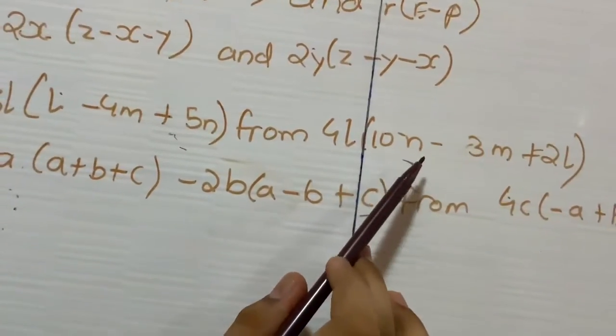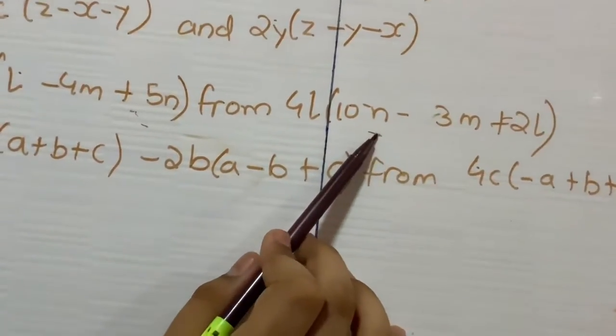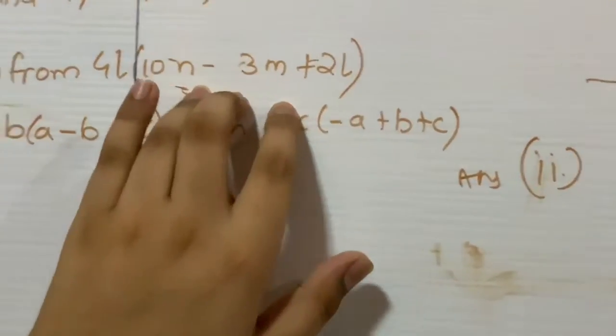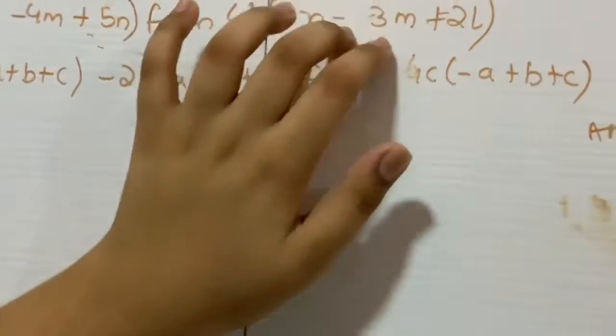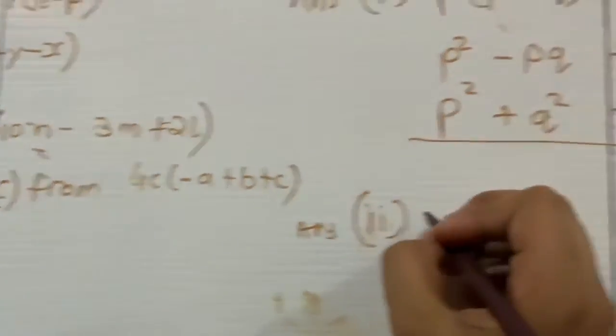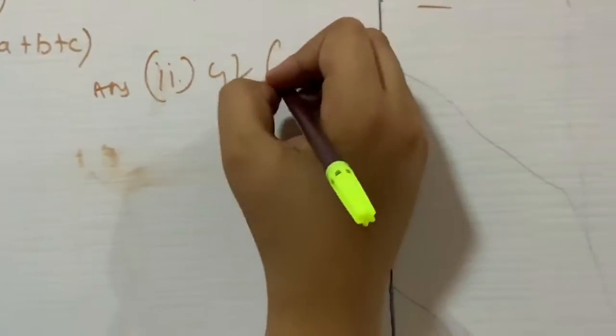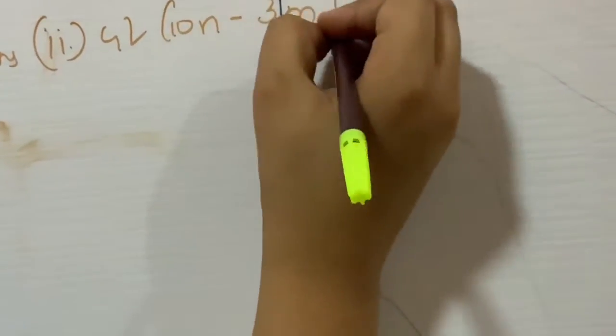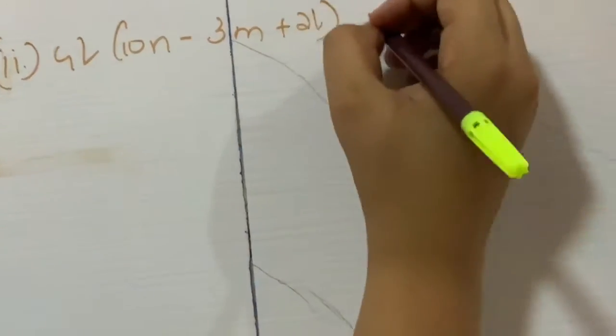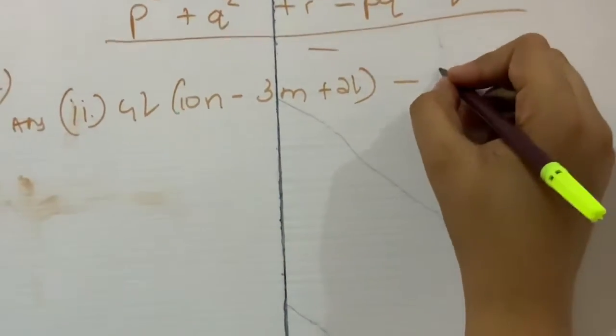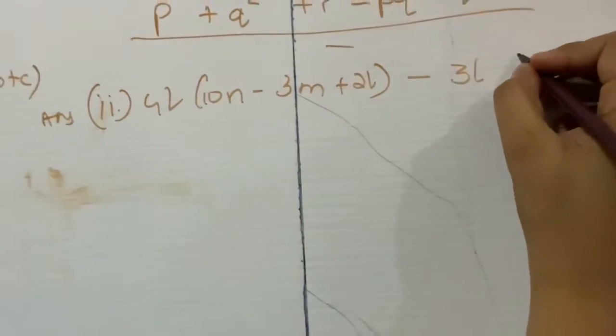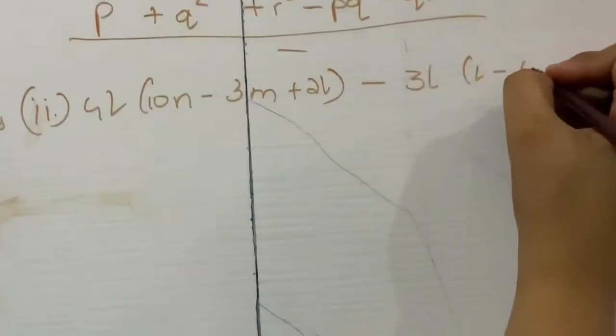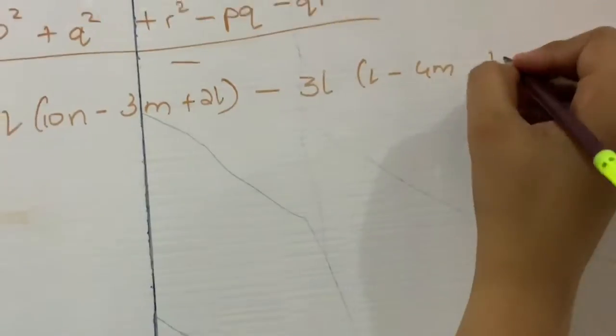Now this we have to subtract from 4L multiplied by 10N minus 3M plus 2L. So here now some children do mistake that they multiply this from this. This is absolutely wrong. We have to do subtraction with this. This is the greater number, and this is the smaller number.